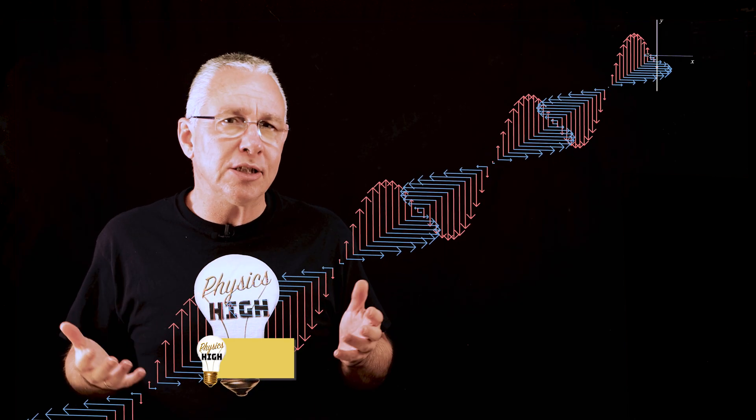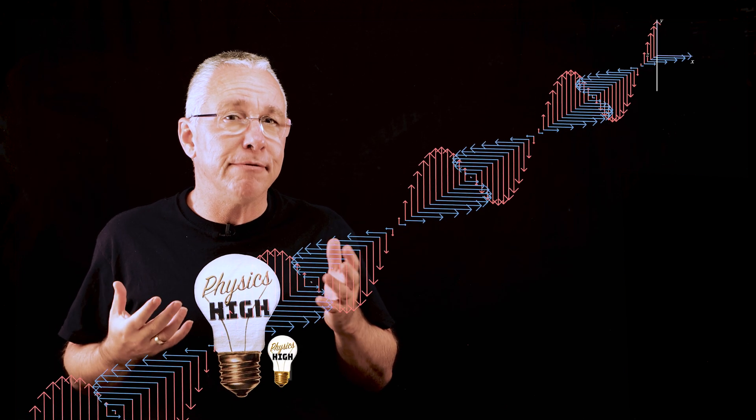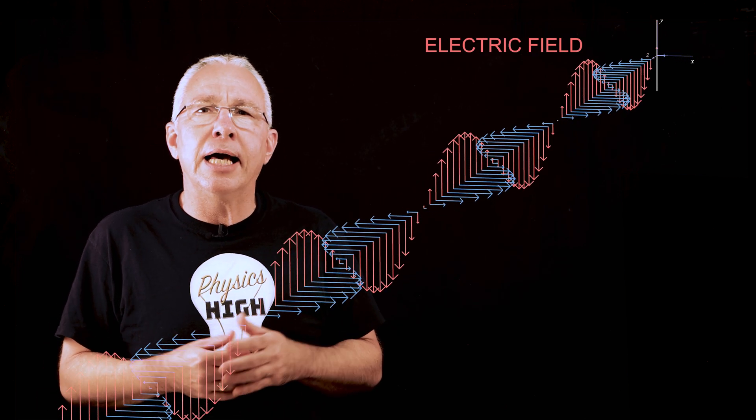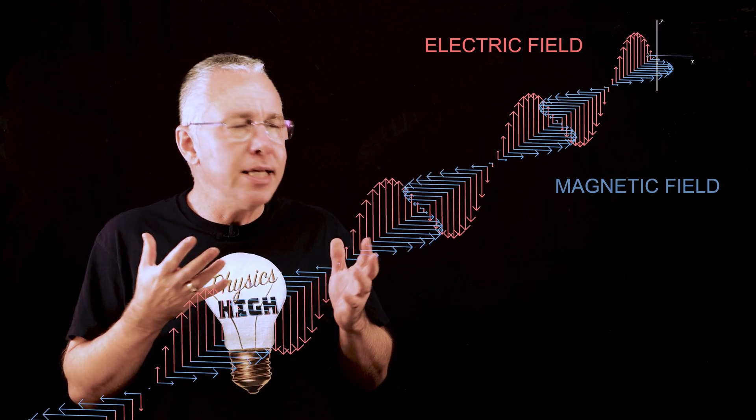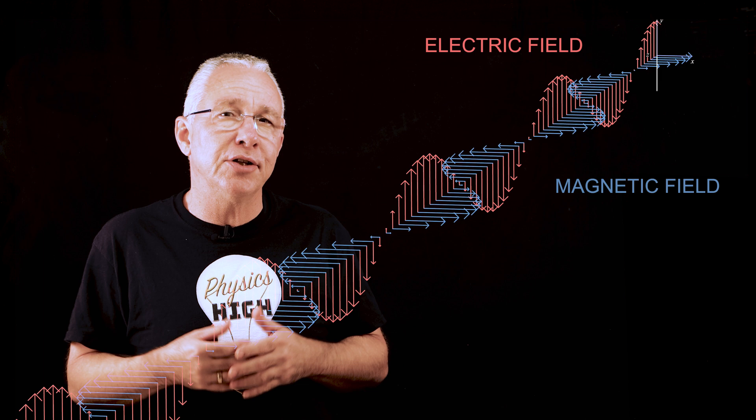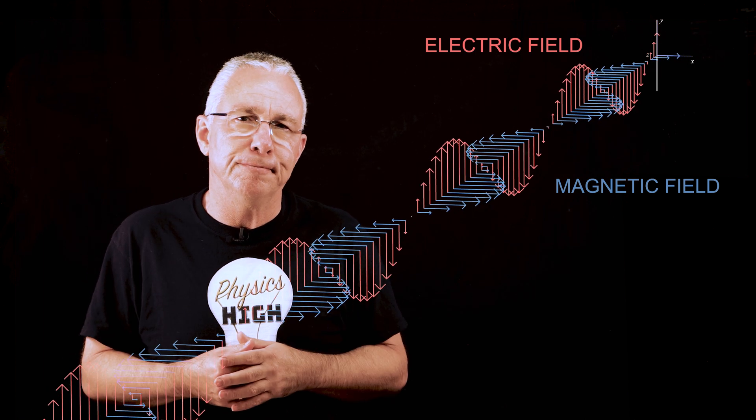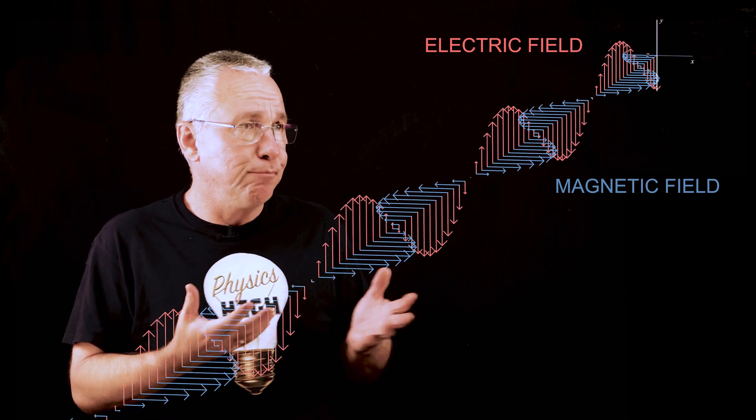Now light is a form of electromagnetic wave and it is a transverse wave where we have a fluctuating electric field and a fluctuating magnetic field both perpendicular to each other. In this case the plane of the electric field is vertical but it can be in any plane.